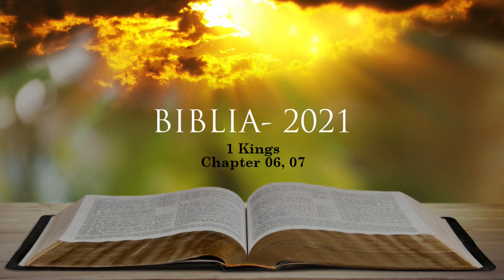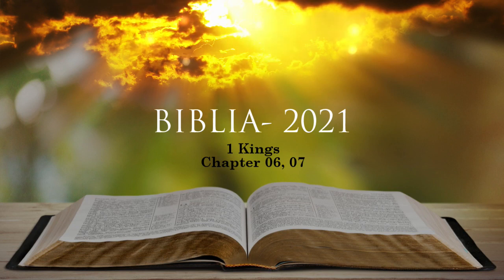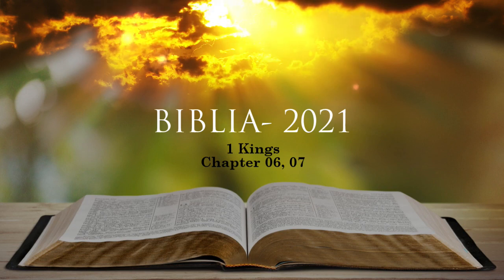One wing of the first cherub was 5 cubits long and the other wing 5 cubits — 10 cubits from wing tip to wing tip. The second cherub also measured 10 cubits. The two cherubim were identical in size and shape. The height of each cherub was 10 cubits. He placed the cherubim inside the innermost room of the temple with their wings spread out. The wing of one cherub touched one wall while the wing of the other touched the other wall, and their wings touched each other in the middle of the room. He overlaid the cherubim with gold.